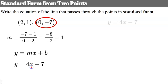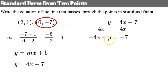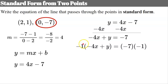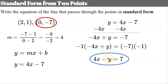Now I'll subtract 4x from each side, giving negative 4x plus y equals negative 7. But this is not yet in standard form because a cannot be negative. So I'll multiply every term by negative 1, giving positive 4x minus y equals positive 7. Now this is in standard form and equivalent to the slope-intercept form.